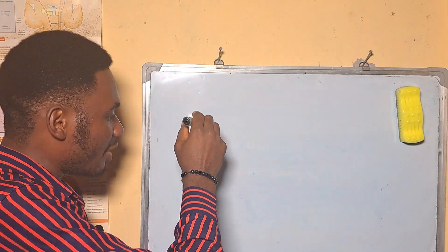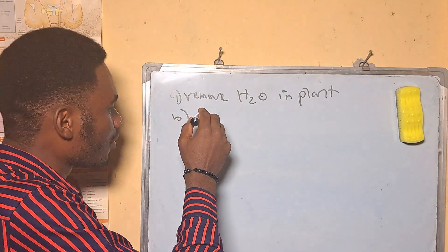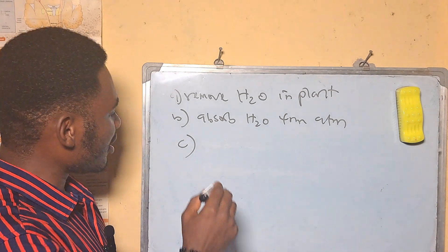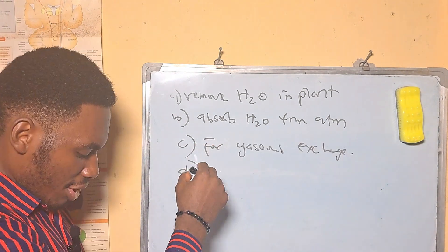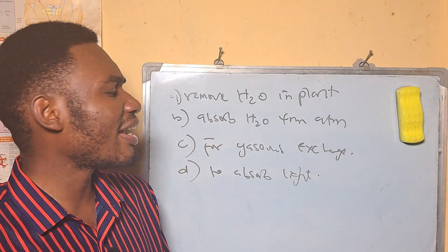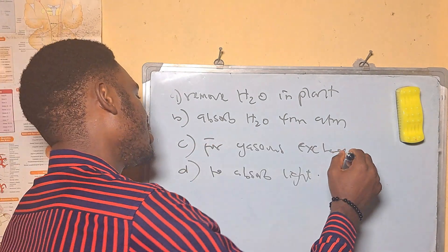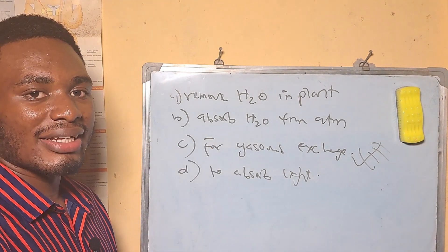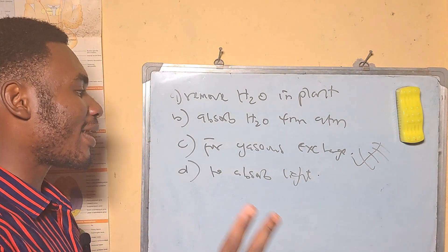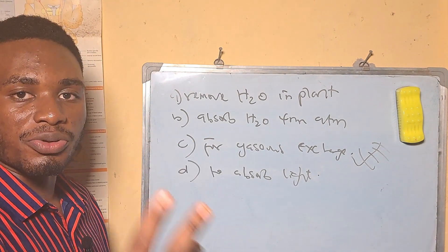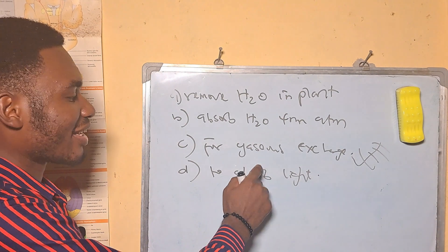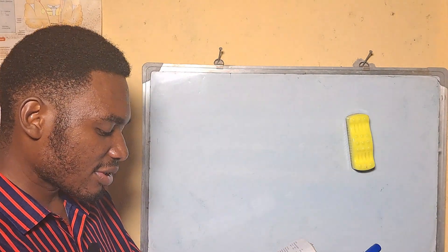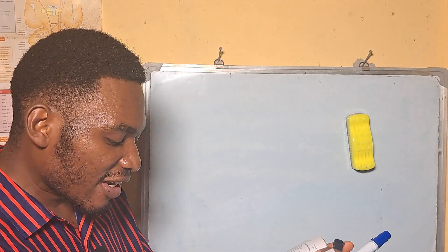The function of lenticels is — A: to remove excess water in plants, B: to absorb water from the atmosphere, C: for gas exchange, D: to absorb light. The answer is C, for gas exchange. Lenticels and stomata are the structures in plants used for respiration, so lenticels exist for gas exchange.